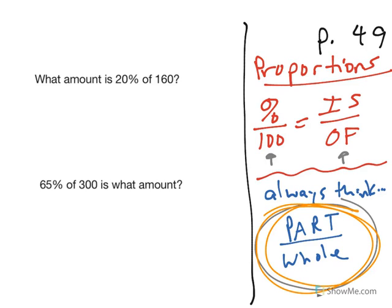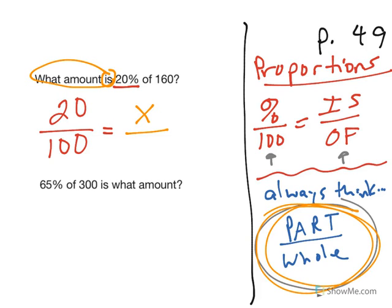So when we look at the two problems here, on page 49 in the boxes. What amount is 20% of 160? I always, always, always start with the percent. So 20% over 100. Then when I look at is, what's connected to that? What amount? I don't know, so there's x. Of 160, so 160 goes on the bottom. Cross multiply, solve that. You should come up with x is 32.